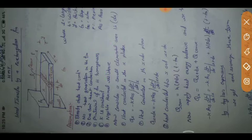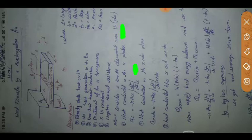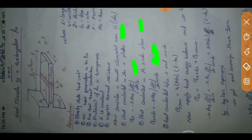We consider a small elementary area dx of the fin and start the derivation. First, we discuss the heat conducted in the x-plane: qx equals minus k times the cross-sectional area times dT/dx, where dT/dx is the temperature gradient. Next, the heat conducted in the x+dx plane: qx+dx equals minus k times the cross-sectional area times dT/dx evaluated at x+dx.